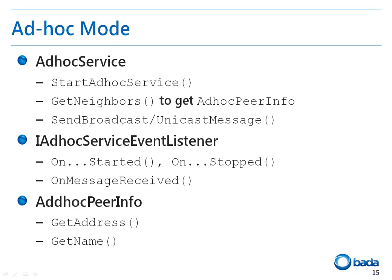In ad hoc mode, an ad hoc network is constructed through the ad hoc service class. The ad hoc service class provides the startAdHocService function to start an ad hoc service and the getNeighbors function to scan for neighboring peers. You can get the peer information through the ad hoc peer info class. To exchange data, the sendBroadcast and unicast message functions are supported. To receive the service state and messages from other peers, there should be a listener. This listener is the iAdHocServiceEvent listener. This listener can identify the start and stop times of the ad hoc service through the onAdHocStarted and onAdHocStopped functions. When a message from another peer arrives, the onMessageReceived function is called so that the message can be handled.